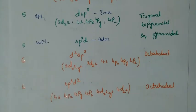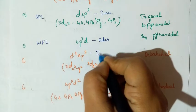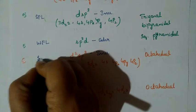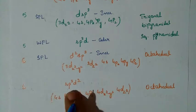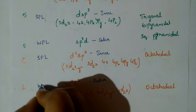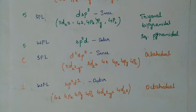For coordination number 6, D2SP3 is an inner orbital complex corresponding to a strong field ligand. SP3D2 is an outer orbital complex corresponding to a weak field ligand. There are a few exceptions which were discussed in the previous video, but this is the general summary for VBT.